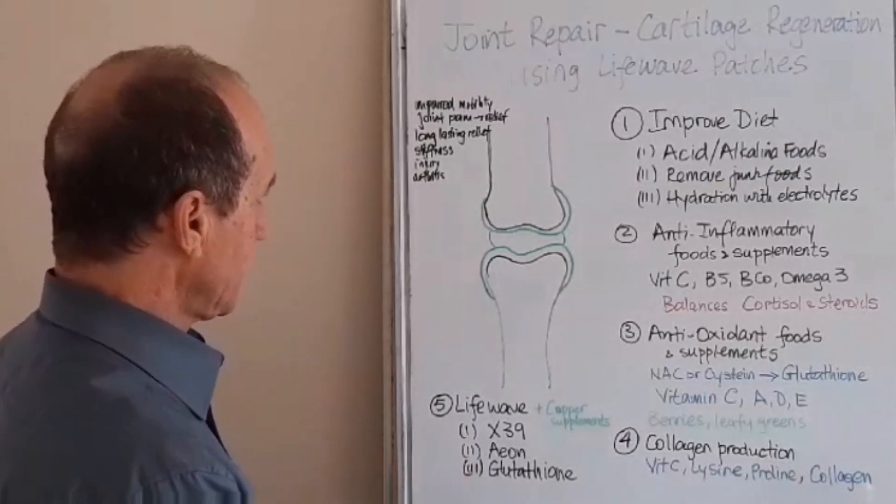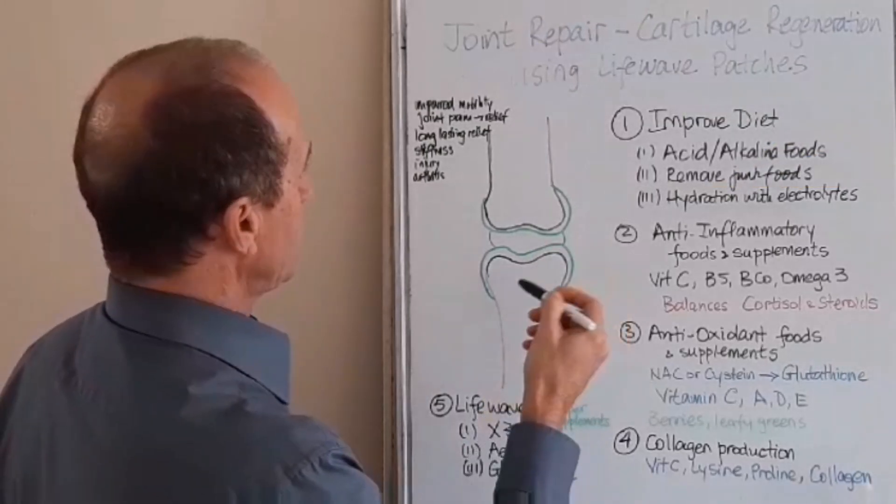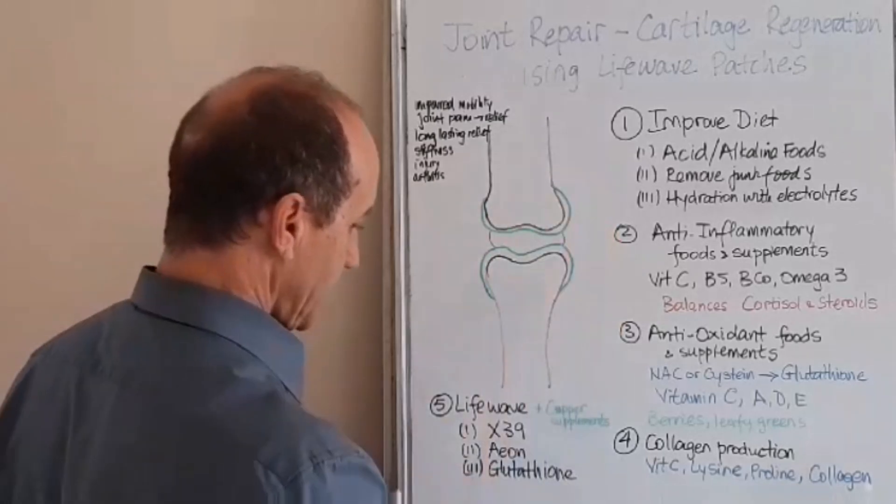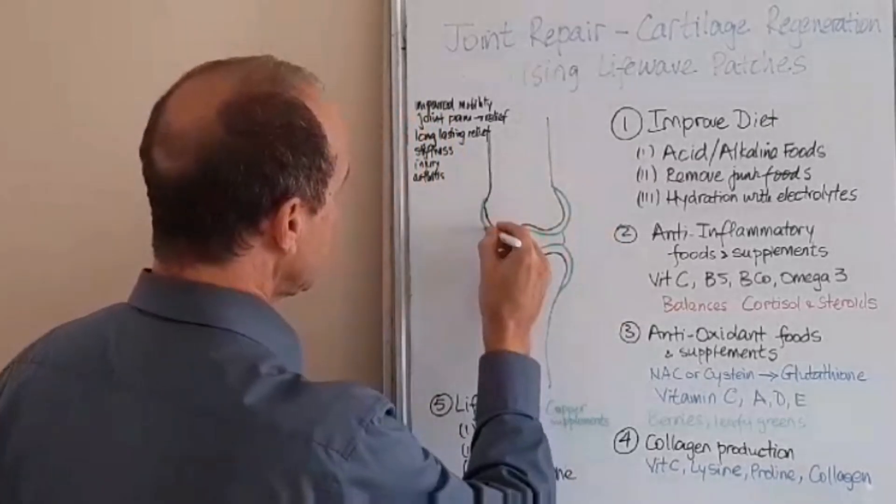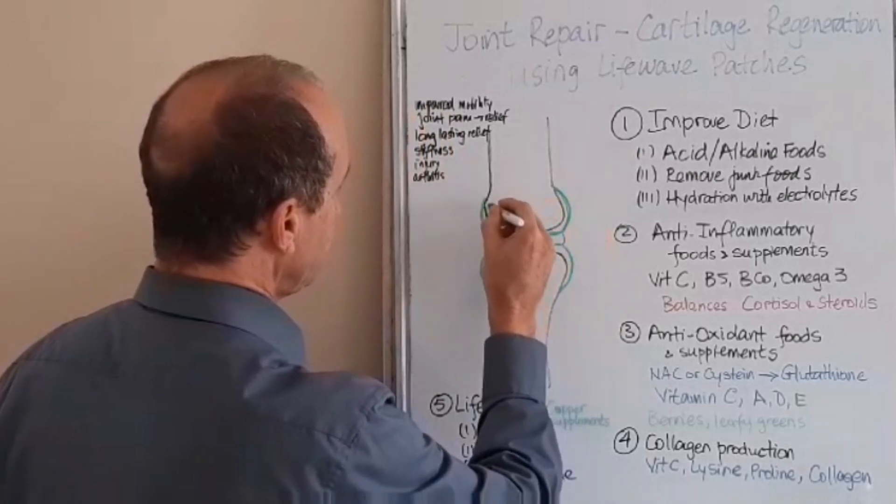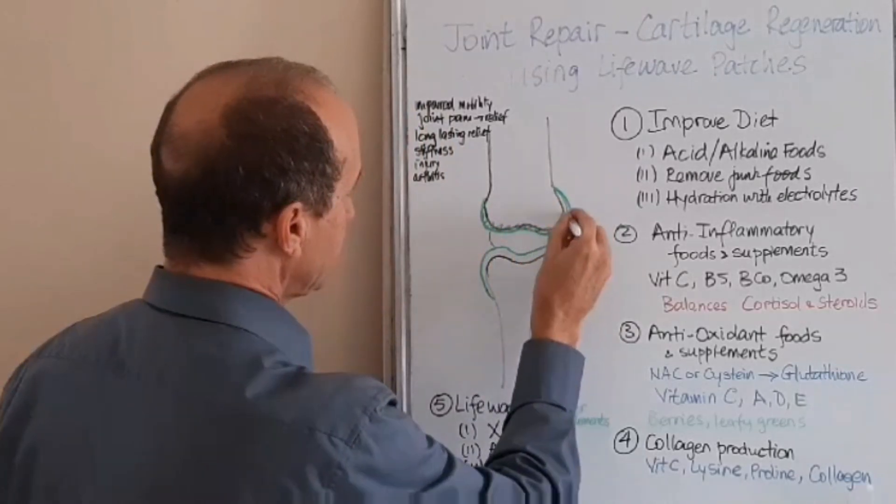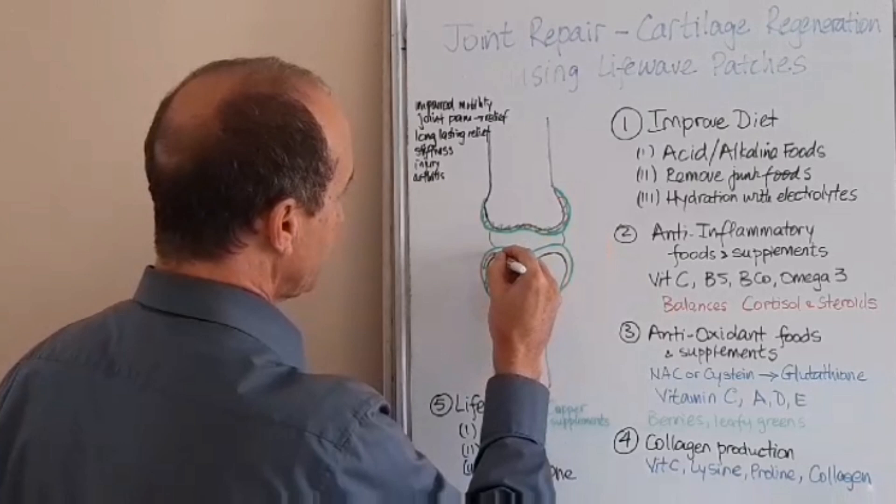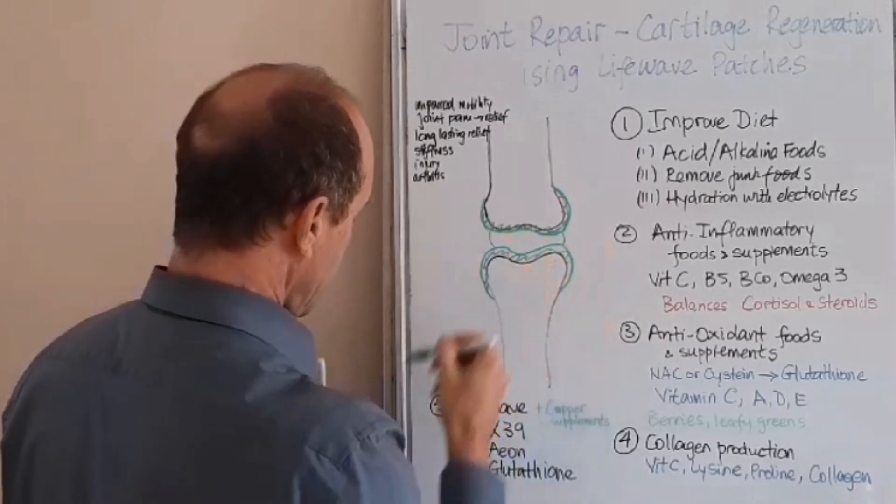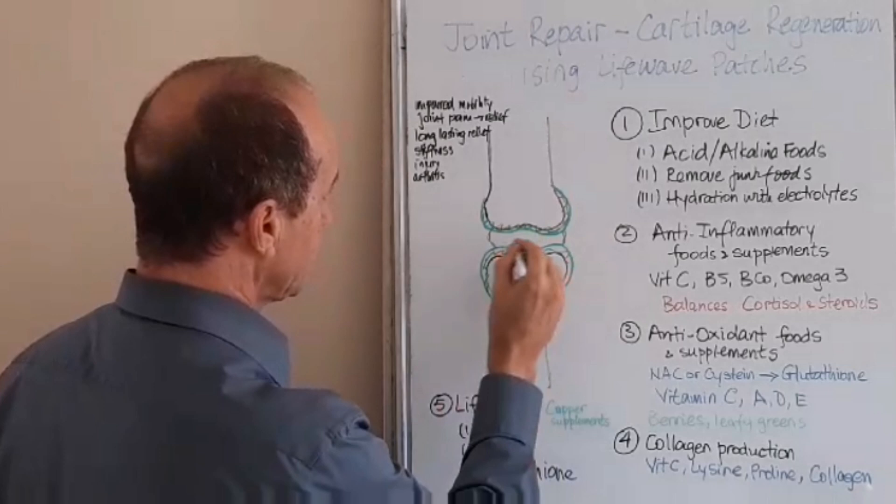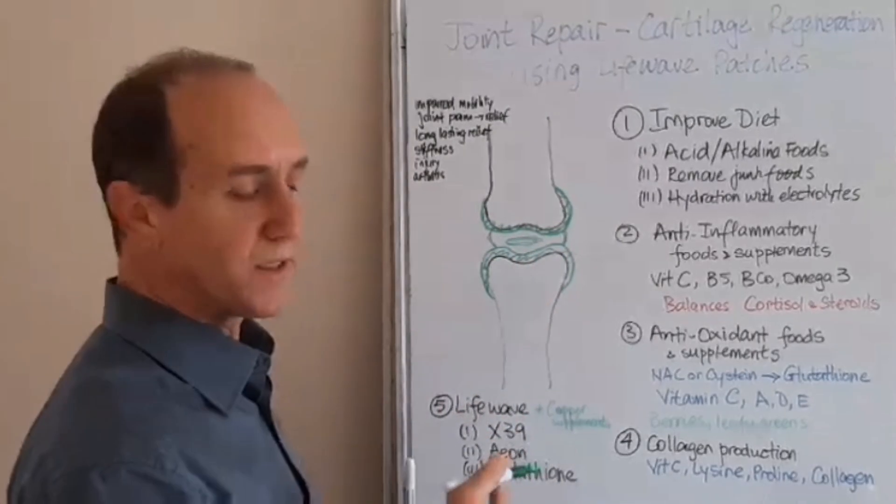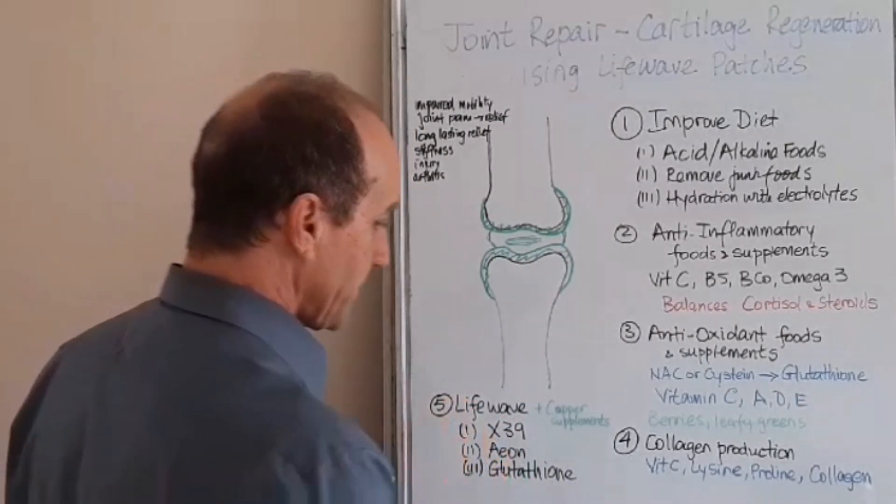So here's an example of the joints here. This is the cartilage here, so this is the green cartilage here. It's got a protective layer here to protect the bone so the bones don't get damaged. Here you've got a little sack here which is called synovial fluid. There's fluids inside there which is a lubricant.